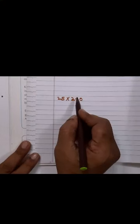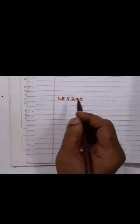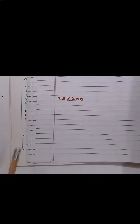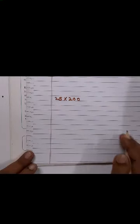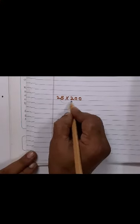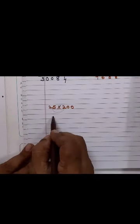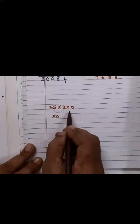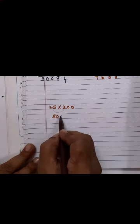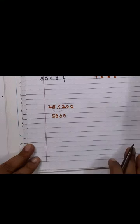If you are confused, children, what you do is you can use your pencil. So 25 into 2 is 50, and now these 2 zeros, simply put these 2 zeros.